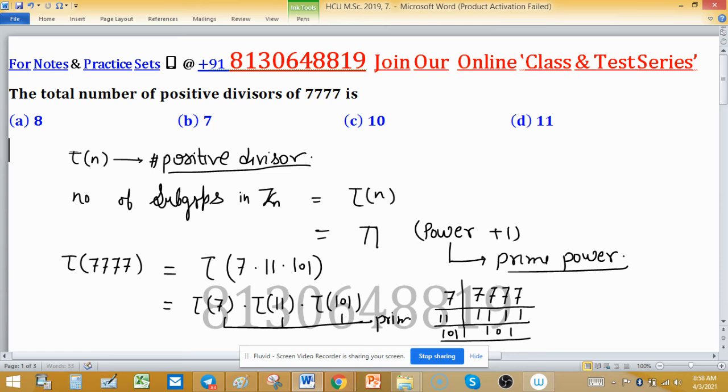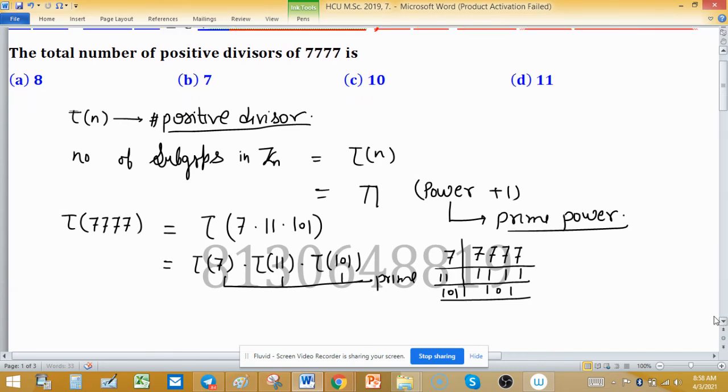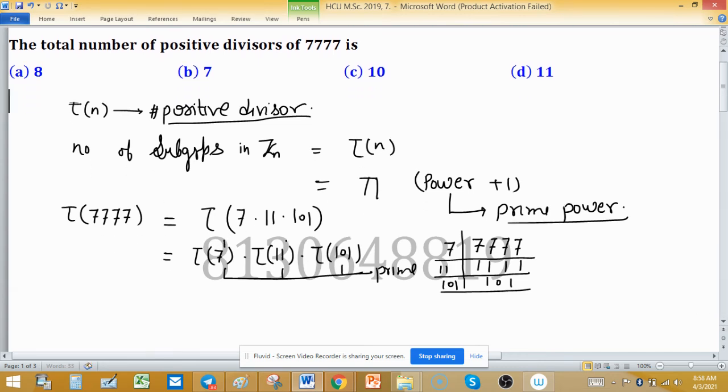According to the tau function, the powers are 1, 1, and 1. Add one to each, so 1 plus 1 becomes 2, again 2, and again 2. So 2 times 2 times 2, and the answer is 8.